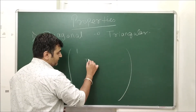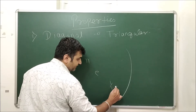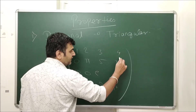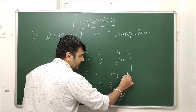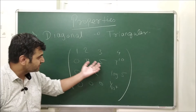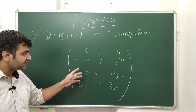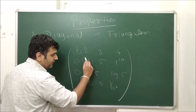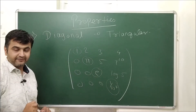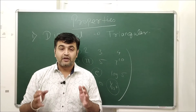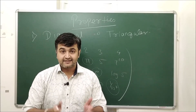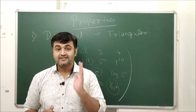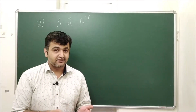In an exam, if you see a matrix like one with entries 1, π, e, 1/10⁷ on the diagonal and zeros below — don't be scared by the complicated numbers. Simply recognize it's a triangular matrix, so the eigenvalues are just 1, π, e, and 1/10⁷. That's the first property: for diagonal or triangular matrices, eigenvalues are the diagonal elements.